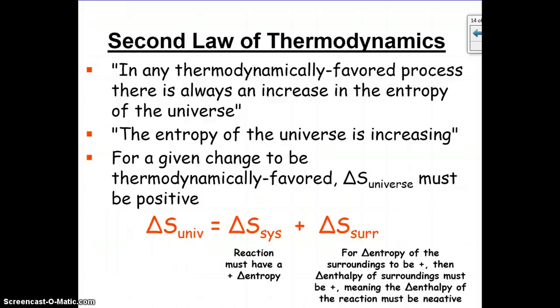All right, and that leads us into the second law of thermodynamics, which states that any thermodynamically favored process, there's always going to be an increase in the entropy of the universe. And the entropy of the universe is constantly increasing. So everything is going towards disorder. For a given change to be thermodynamically favored, the delta S of the universe must be positive. So even if the substance is decreasing in entropy, the surroundings must be increasing enough so that it can overcome the system's entropy so that the delta S of the universe still remains positive. So it is possible for reactions that have a decrease in entropy to occur, but it has to balance out with the entropy of the surroundings.